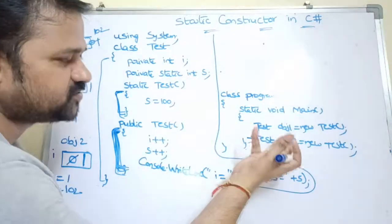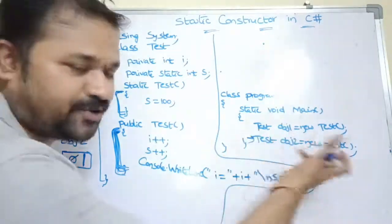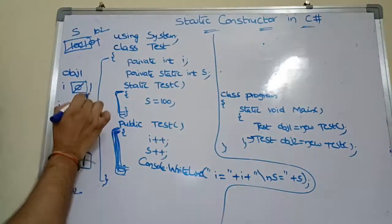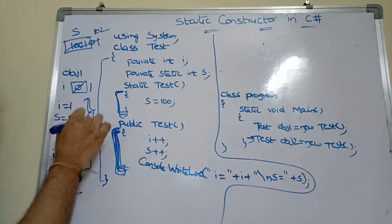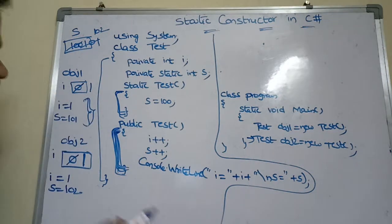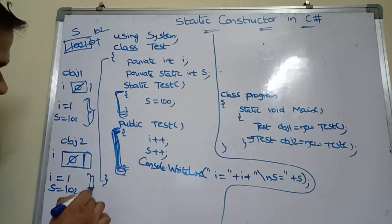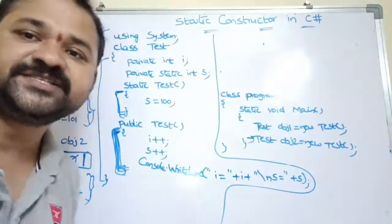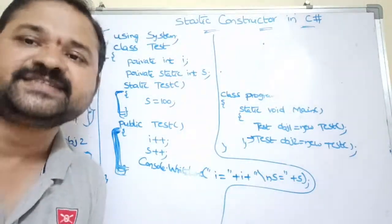There are no other statements in the main method. The final output is: first, 'i = 1, s = 101'; then 'i = 1, s = 102'. This is about static constructors in C#.